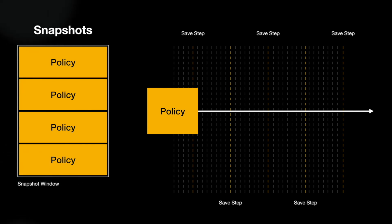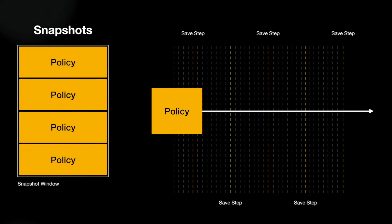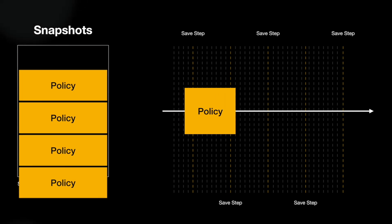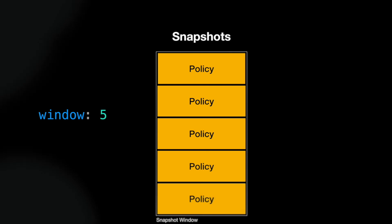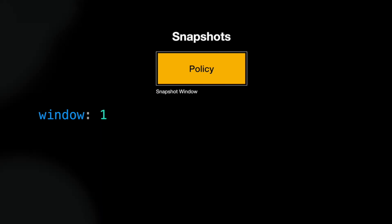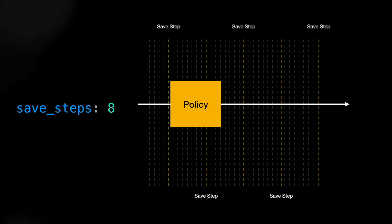We only keep a certain window of policies, so step one is discarding the oldest policy. After taking a few more steps, we again throw out the oldest snapshot and copy the current one. The size of the snapshot window is defined by us — in this case it is four, but we could change it to five or even one. It describes the number of policy snapshots we keep at all times, usually between five to 30. We can also define how often the snapshotting should take place; in our example, save steps was set to eight.